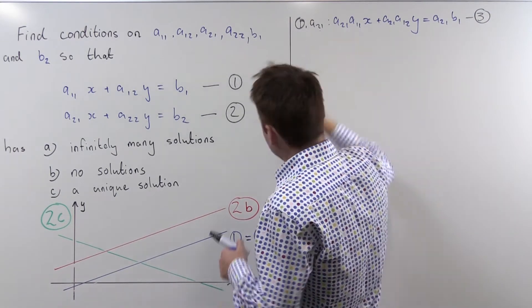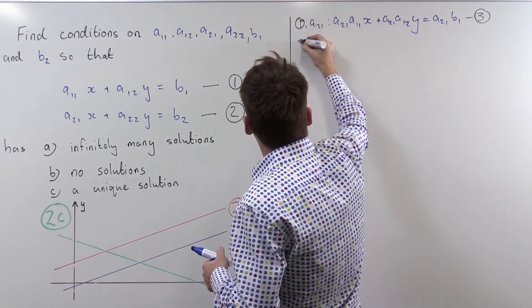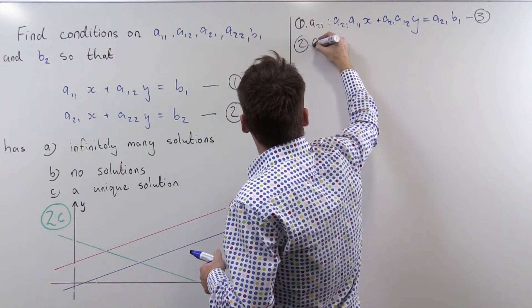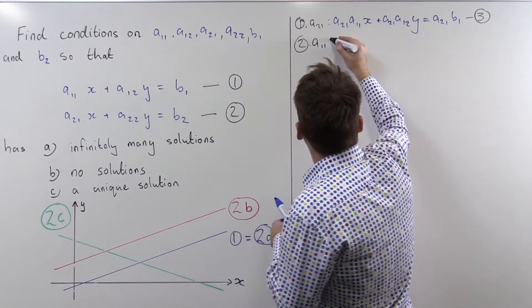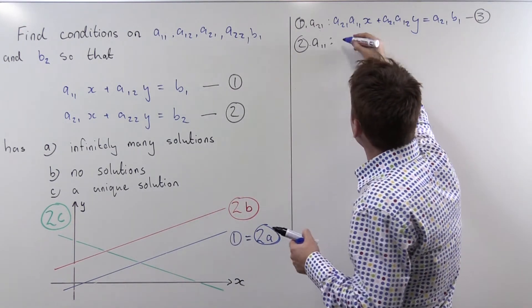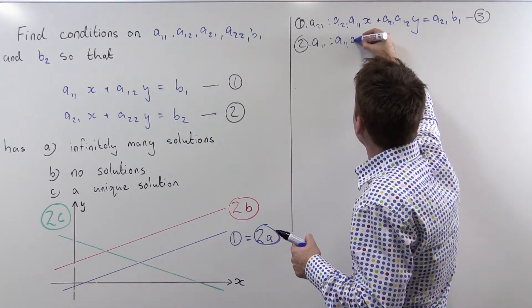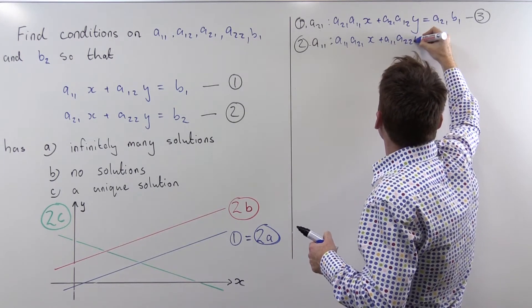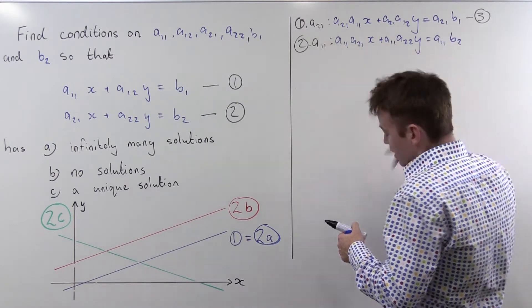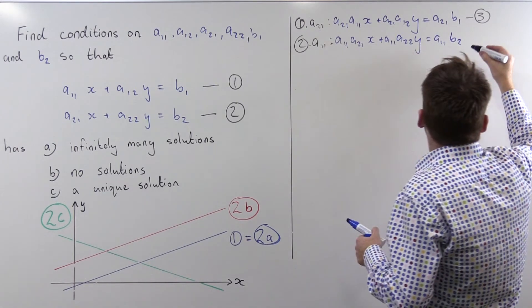Now I'll take equation two and multiply that by a₁₁ and what I get is a₁₁a₂₁x plus a₁₁a₂₂y equals a₁₁b₂, and I'll call this equation four.